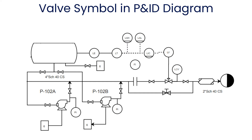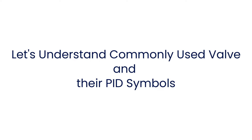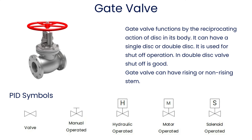This is a P&ID example. In this P&ID there are many types of valve symbols available. These are the valve symbols. Let's understand some valves and their P&ID symbols.